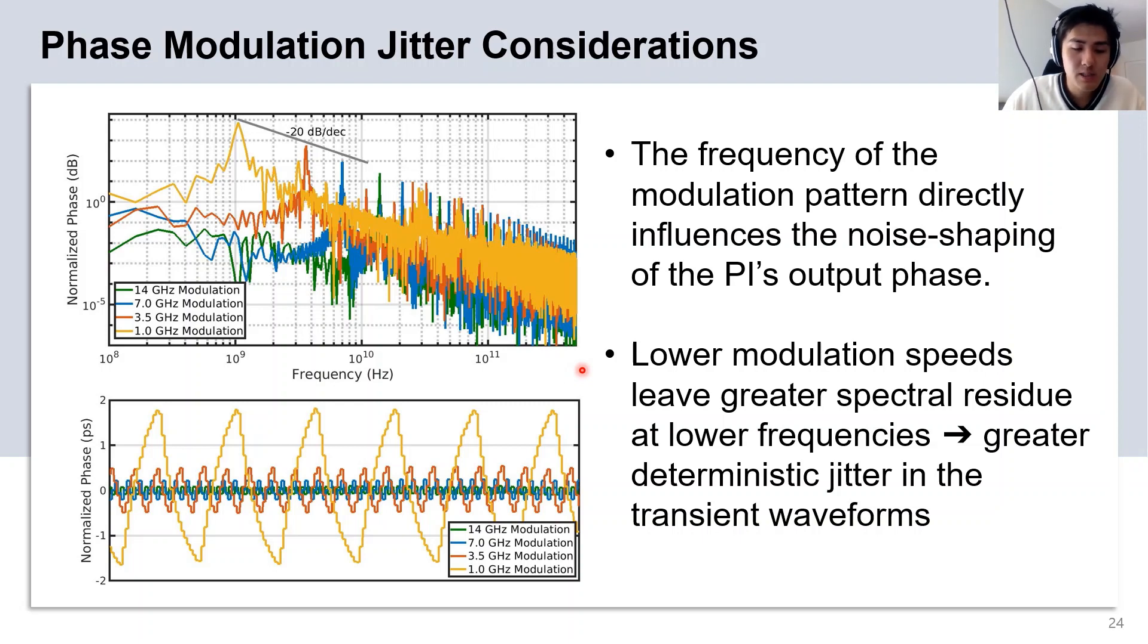From the phase output spectrum, we can see that the frequency of modulation performs noise shaping. As we increase the frequency of modulation, the phase noise is pushed to higher frequencies, which is then filtered by the ILO's first-order low-pass characteristics, resulting in less output jitter. We can see this clearly in this transient waveform here of a 1010 modulating pattern, in which a lower modulation frequency has a much higher deterministic jitter compared to a much higher modulation frequency.